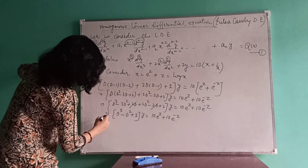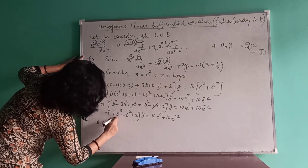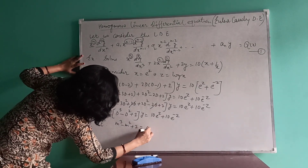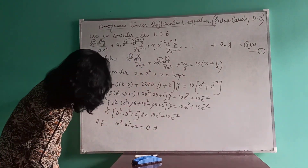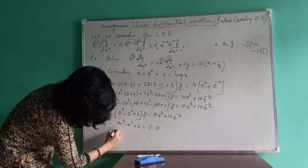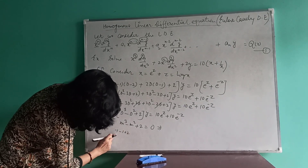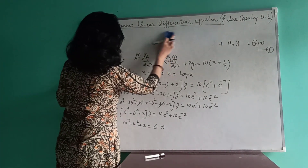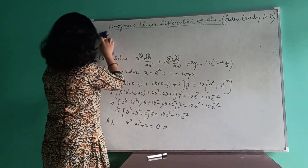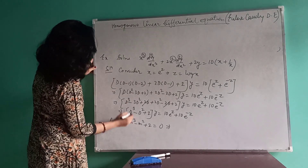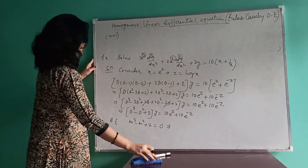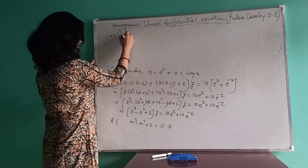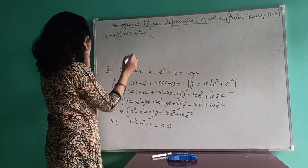Now we can find CF and PI. For CF we require the auxiliary equation: replace D by M to get M³ minus M² plus 2 equals 0. To find the roots, using hit-and-trial: try M equals minus 1 — we get minus 1 minus 1 plus 2 equals 0, so minus 1 is satisfied. Therefore one root is M equals minus 1. We then divide the polynomial M³ minus M² plus 2 by (M plus 1) to find the remaining roots.